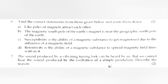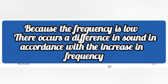Question 7. The sound produced by vibrating a tuning fork can be heard by us, but we can't hear the sound produced by the oscillation of a simple pendulum. Describe the reason. Answer: Because the frequency is low. There occurs a difference in sound in accordance with the increase in frequency.